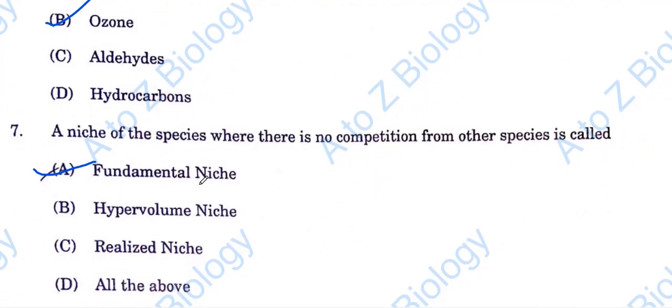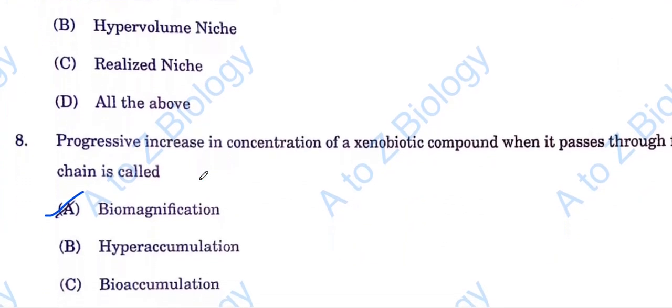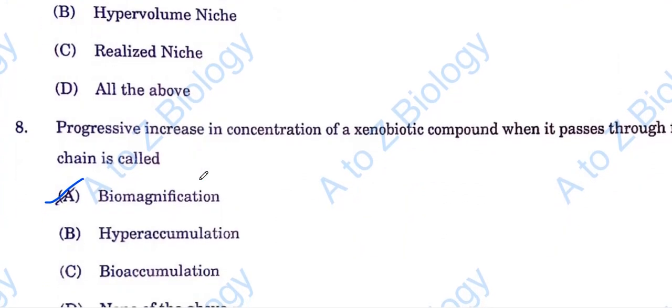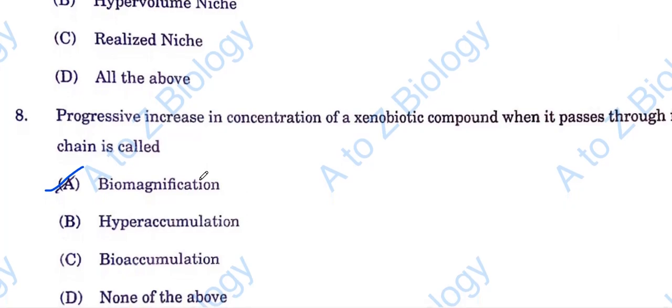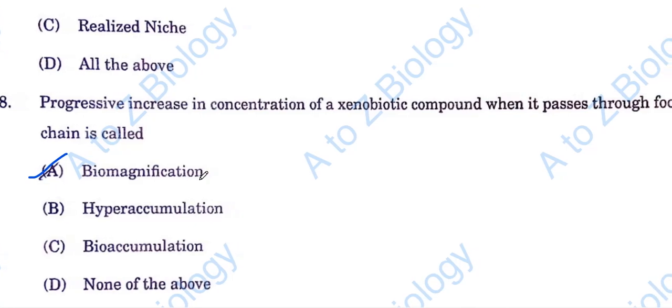Next question. A niche of the species where there is no competition from other species is called fundamental niche. Progressive increase in concentration of a xenobiotic compound when it passes through food chain is called biomagnification, option A.